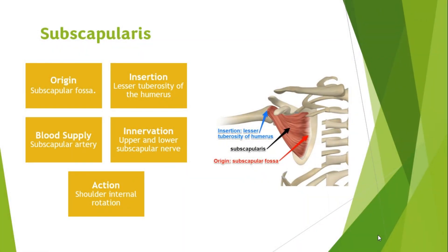The final muscle is the subscapularis. The subscapularis muscle originates in the subscapular fossa and inserts onto the lesser tuberosity of the humerus. It is the largest and strongest rotator cuff muscle. The blood supply is the subscapular artery, and the muscle is innervated by the upper and lower subscapular nerves. In isolation, this muscle performs medial and internal rotation of the humerus.